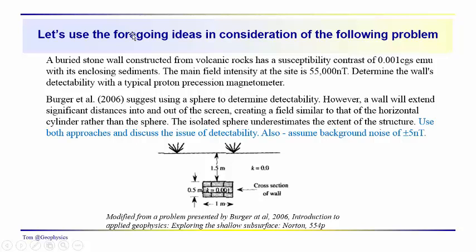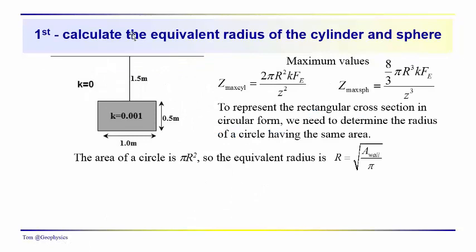In order to do this, since both the cylinder and the sphere are represented in terms of circular cross sections, we have to figure out what the equivalent radius is. To represent the rectangular cross section in circular form, you need to determine the radius of an equivalent circle having the same area. The area of the circle, obviously, is pi r squared. So the equivalent radius is just the square root of the area of the wall here, which is 1 times 0.5, or 1.5 meters, divided by pi. So we get 0.5 meters squared, and that would give us an r of approximately 0.4 meters.